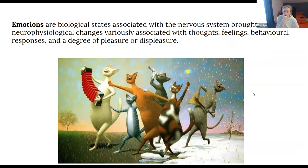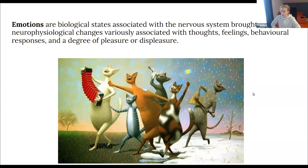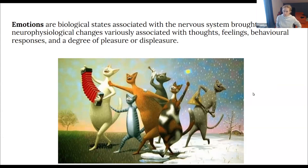We also call emotions states of our mind. Emotions are biological states associated with the neural system, brought on by neurophysiological changes, and are associated with thoughts, feelings, behavioral responses, and a degree of pleasure and displeasure. There is currently no scientific consensus on a definition of emotions, and emotions are often intertwined with mood, temperament, personality, creativity, and motivation.